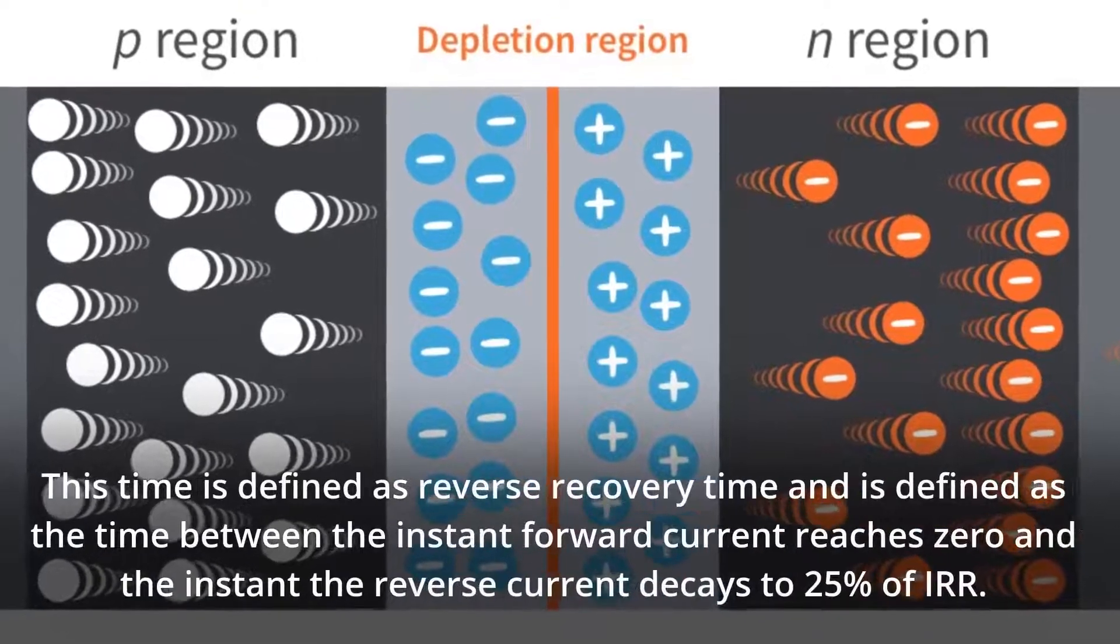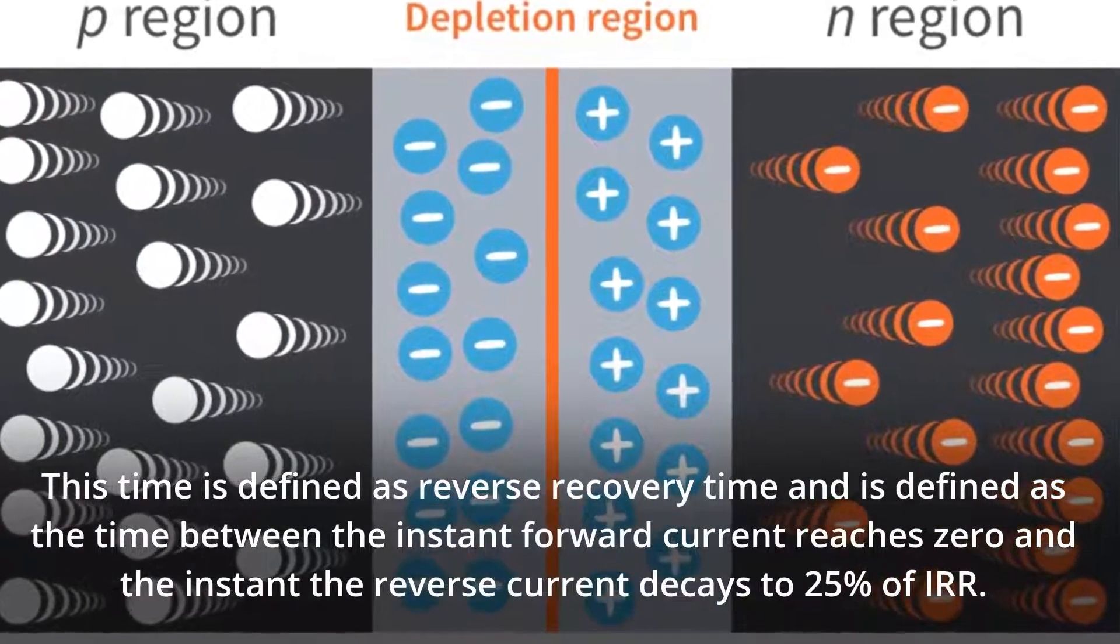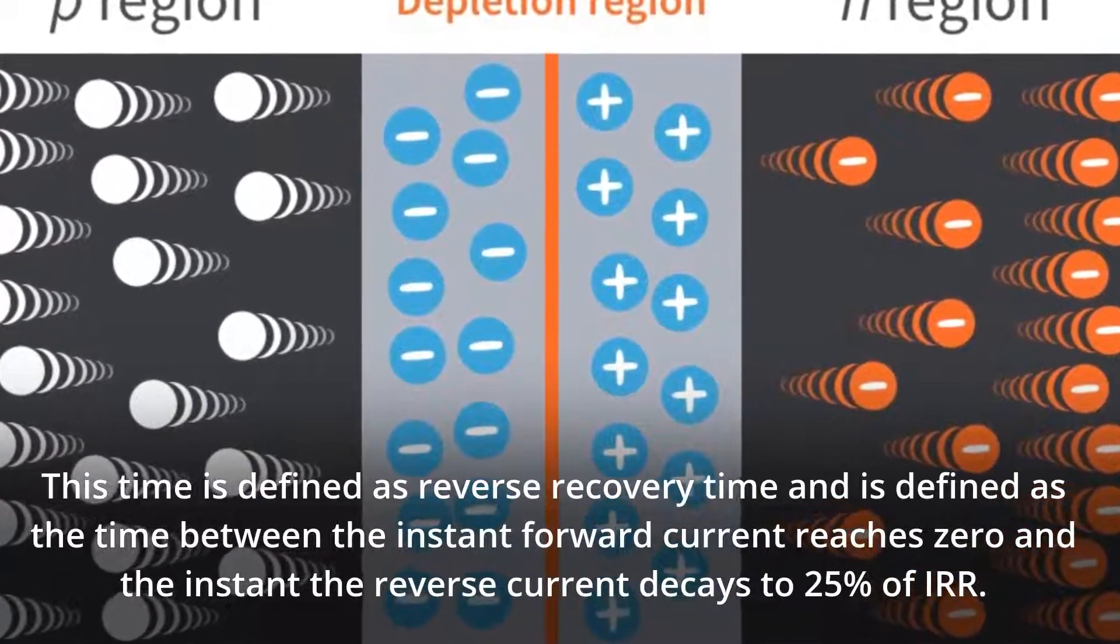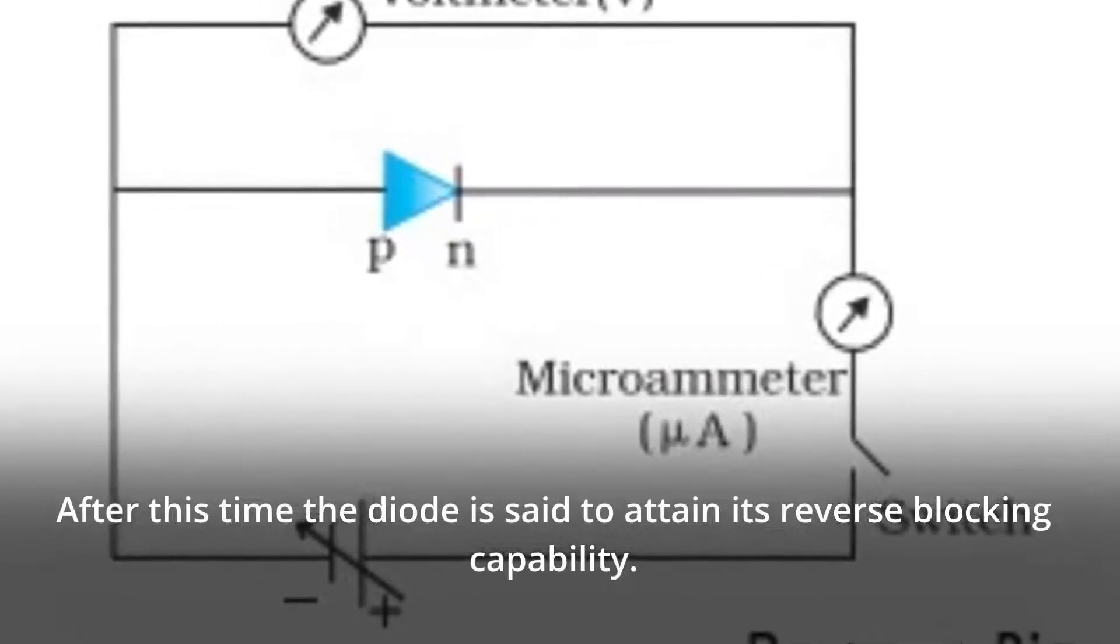This time is defined as reverse recovery time and is defined as the time between the instant forward current reaches zero and the instant the reverse current decays to 25% of IRRM. After this time the diode is said to attain its reverse blocking capability.